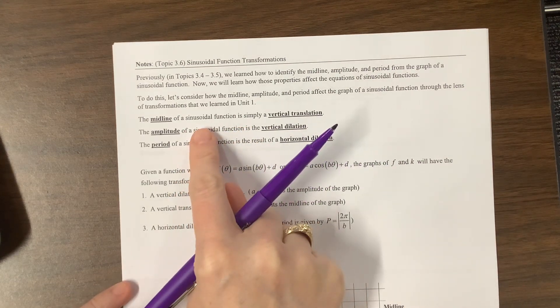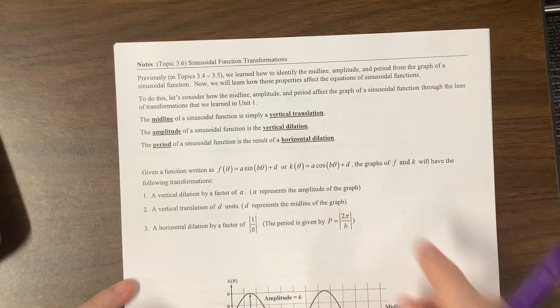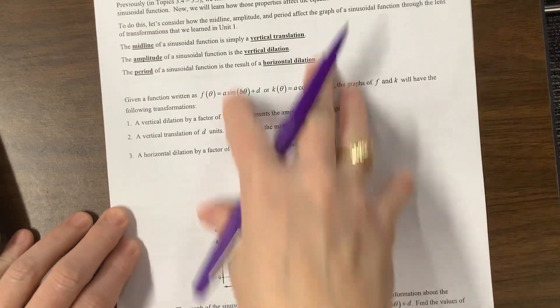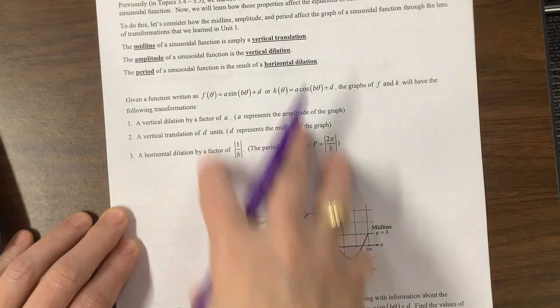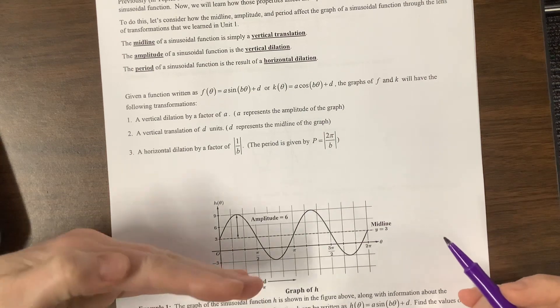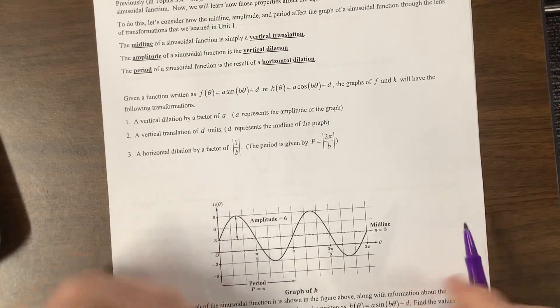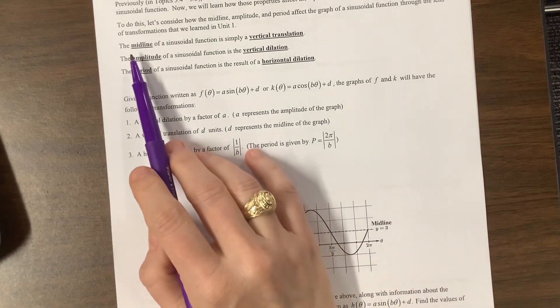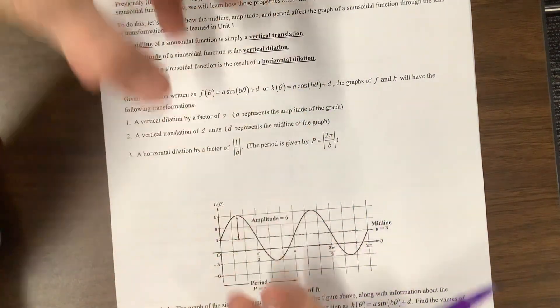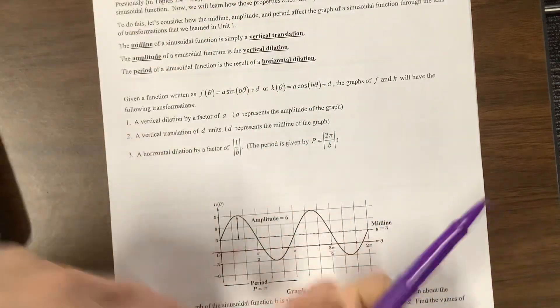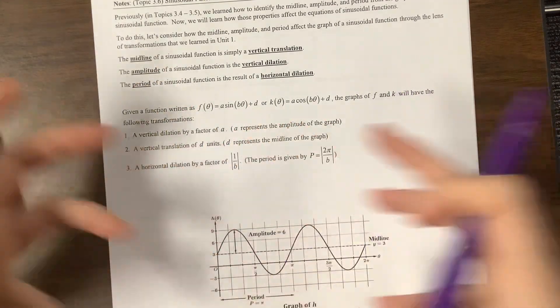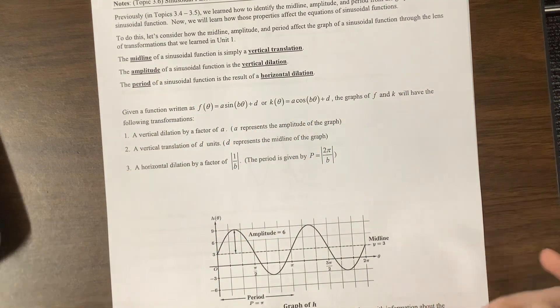The midline of a sinusoidal function is simply a vertical translation. If I take a sine function and shift it up or down, my midline shifts with everything else. The midline had started on my parent function at y equals 0, so whatever the shift up or down is will be the new midline. The amplitude is the vertical dilation. However much I stretch the function vertically, that's going to give me the amplitude. The period is a result of how much I've stretched it horizontally.